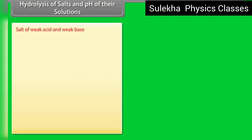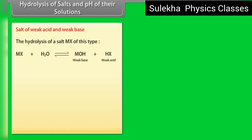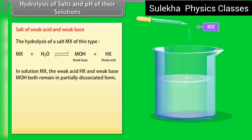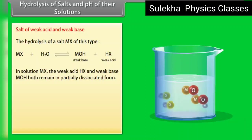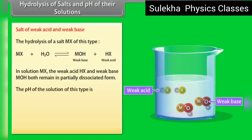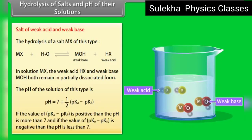Salt of a weak acid and weak base: both the weak acid HX and the weak base MOH remain in partially dissociated form. The pH of such a solution is given by pH = 7 + ½(pKa − pKb). If pKa − pKb is positive, the pH is more than 7; if pKa − pKb is negative, the pH is less than 7.